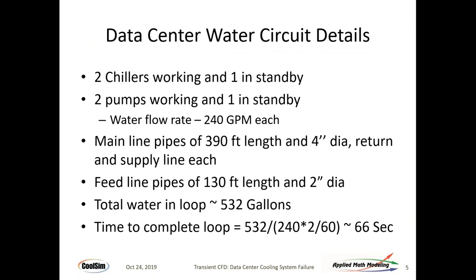In this particular design we had two chillers and two pumps for redundancy. You also need to know how much water is in the loop — specifically the chilled water loop closest to the data center — because that's what holds the heat. These details are different for every data center. In this case: 390 feet of four-inch diameter return and supply, two-inch diameter feed lines, a total of 532 gallons, and a loop transit time of 66 seconds — 33 to get to the chiller and 33 to get back.